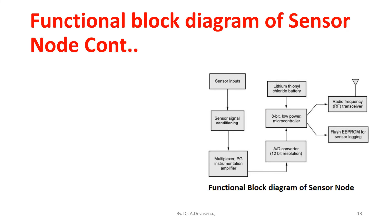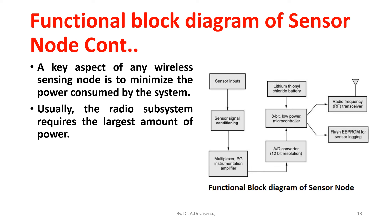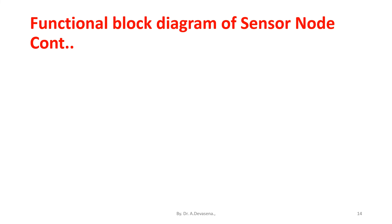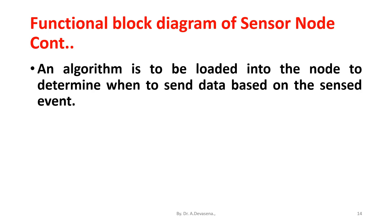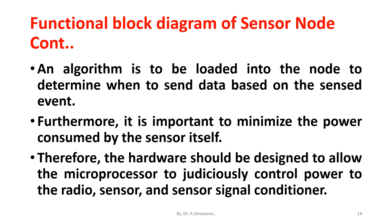A key aspect of any wireless sensing node is to minimize the power consumed by the system. Usually, the radio subsystem requires the largest amount of power. Therefore, data is sent over the radio network only when it is required. An algorithm is to be loaded into the node to determine when to send data based on the sensed event. It is important to minimize the power consumed by the sensor itself. Therefore, the hardware should be designed to allow the microcontroller to judiciously control power to the radio, sensor, and sensor signal conditioner.